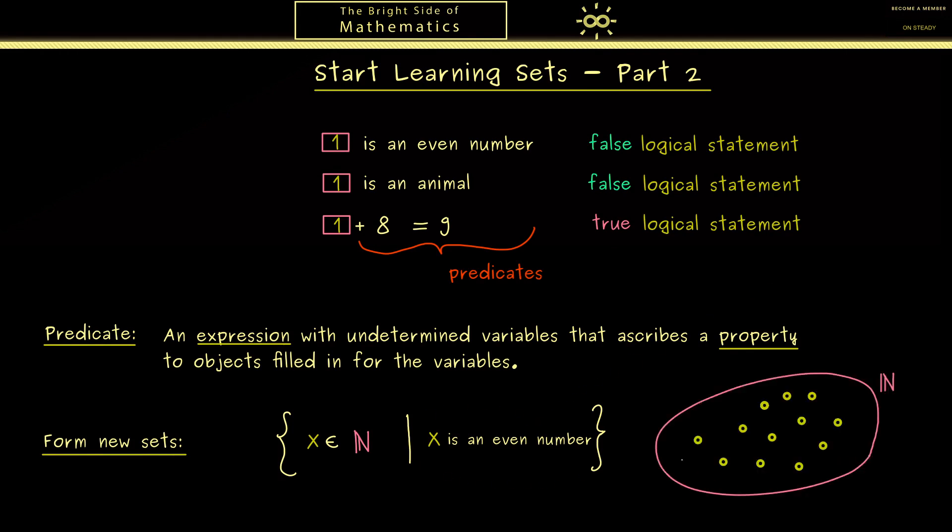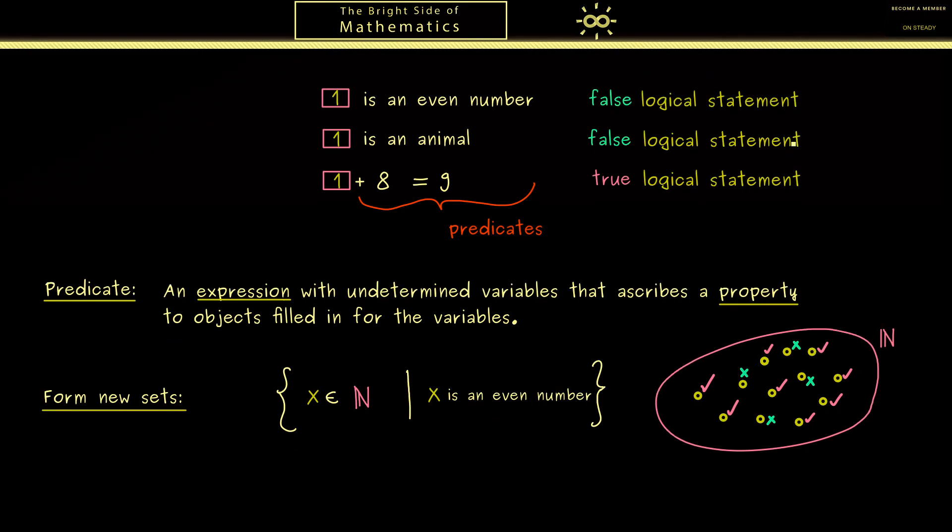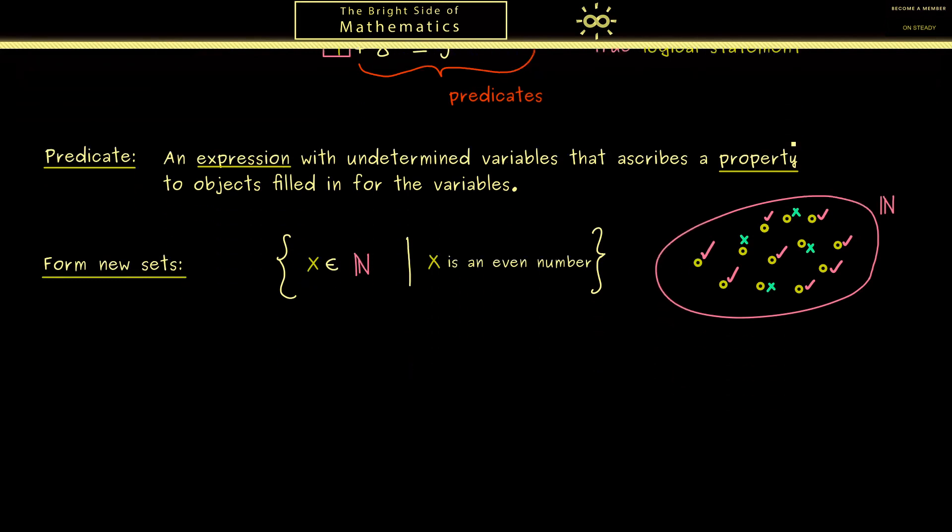Hence the visualization should be like this. You have here the old set which is in our example ℕ but it could be any set. Then you put the elements into the predicate and check the truth value. So 2 here, 2 here, and maybe false for other ones. And there you see we get out a new collection. All the elements we checked green form the new set. The important thing for you is now this construction we can always do in set theory.